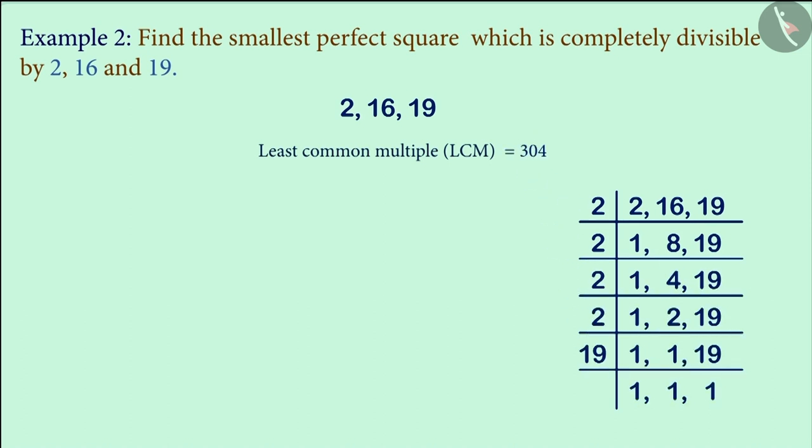Thus, we would have received the number 304. The number 304 is not a perfect square, but here we need a perfect square.